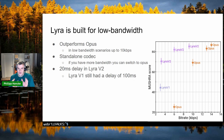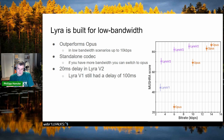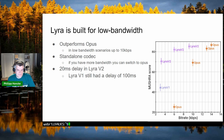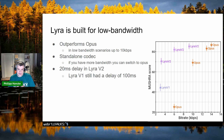Lyra is built for the low-bandwidth use case — 10 kbps or less — where it outperforms Opus. A MOS score chart from the Lyra version 2 blog post shows it beats Opus at these bit rates. Above 10 kbps you'd rather switch back to Opus. Lyra version 2 is also a big improvement over version 1, which had an algorithmic delay of 100 milliseconds making it unusable for RTC. Version 2 pushed that down to 20 milliseconds.